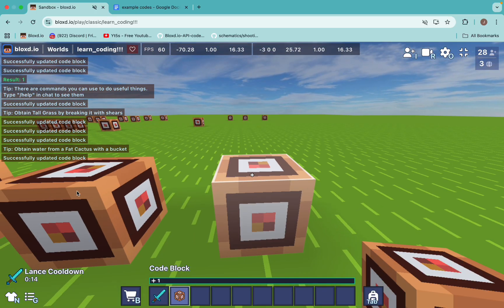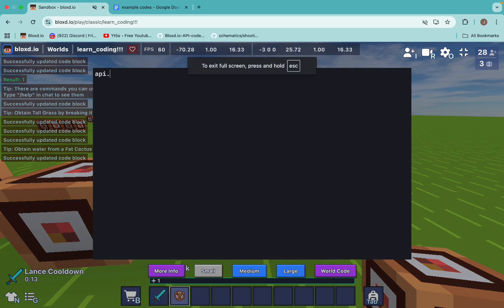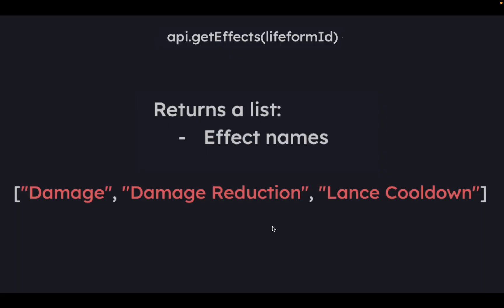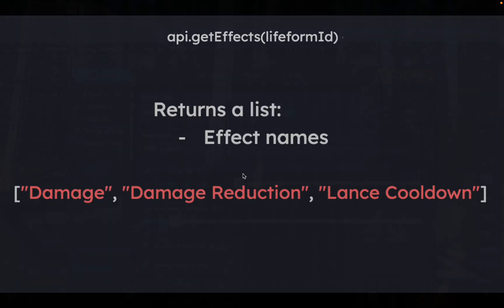Let me introduce you to api.getEffects. What api.getEffects does is you choose the player — or entity, since mobs can take effects too — that you want to get the effects from, and it returns a list of effect names. For example, it will return 'damage', 'damage reduction', 'Lance cooldown' — it even returns custom effects.